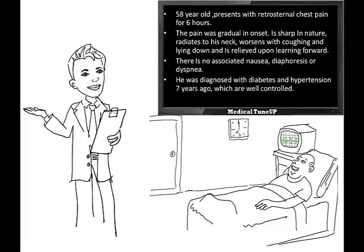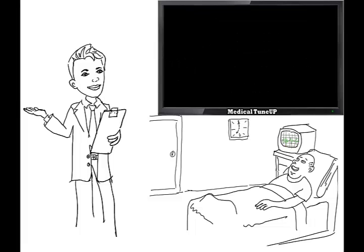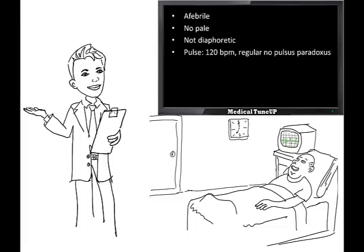He was diagnosed with diabetes and hypertension 7 years ago, which are well controlled. No other comorbid conditions are present. On general examination, patient is afebrile, no pallor is present, he is not diaphoretic, pulse 120 beats per minute regular, no pulsus paradoxus, BP 150/90 mmHg, JVP not elevated.